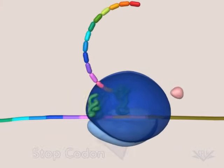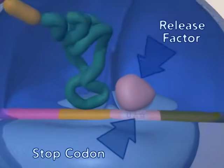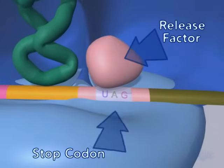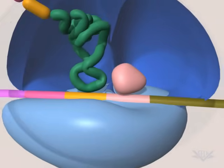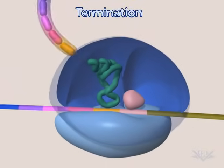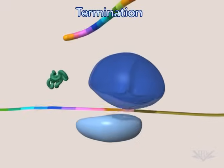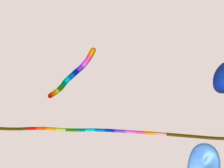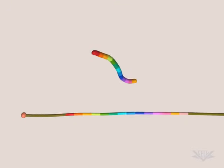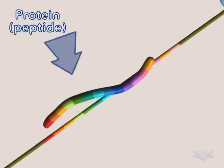When a stop codon is encountered in the A-site, a release factor enters the A-site and translation is terminated. When termination is reached, the ribosome dissociates and the newly formed protein is released.